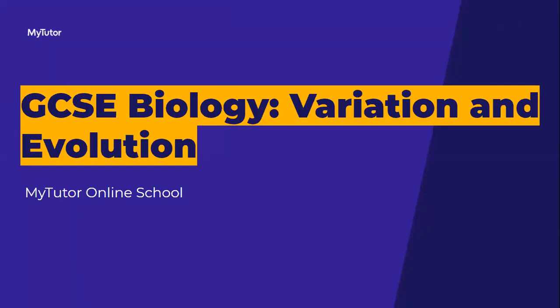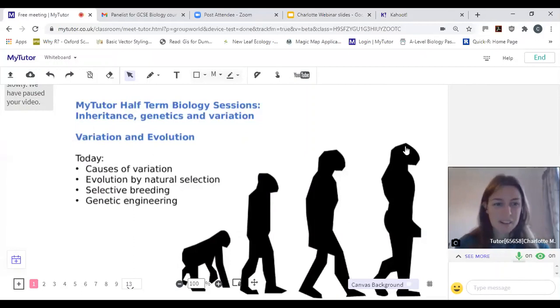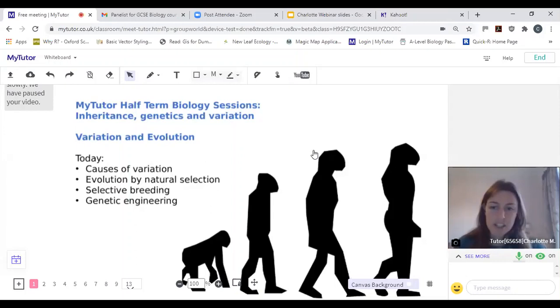We've got quite a lot to cover today, so I've got a brief summary here. Today we're going to talk about causes of variation, evolution by natural selection, selective breeding, genetic engineering, and if we've got time at the end, we're also going to tag on a little bit about extinction and fossils as well, but we'll see how we do. If not, we'll cover that tomorrow.